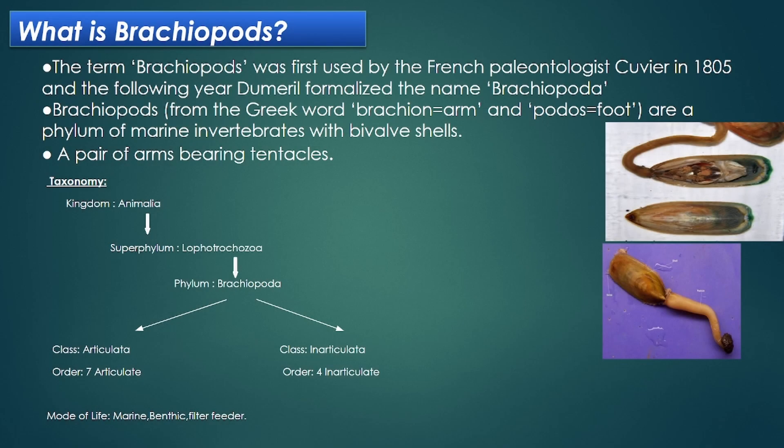Brachiopoda are a group of bilaterally symmetrical organisms that have two mineralized valves. Their range is Cambrian to recent. The mineral composition is calcite and phosphate, and they are mainly bottom dwelling. Their average size is 20 to 70 mm but can range up to 370 mm. They are classified into two classes — Articulata and Inarticulata — based on their articulating hinge.